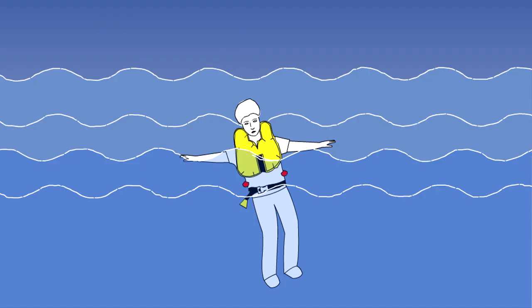When correctly fitted and fully inflated, the jacket will turn an unconscious person onto their back and support them at about 45 degrees, with their face clear of the water.